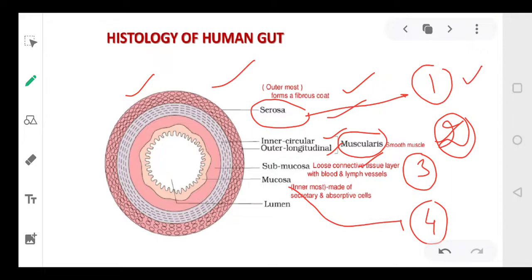There are four layers. The outermost is serosa, muscularis, submucosa and mucosa. And in center, there is a lumen through which the food will be passing or flowing from one part to another.